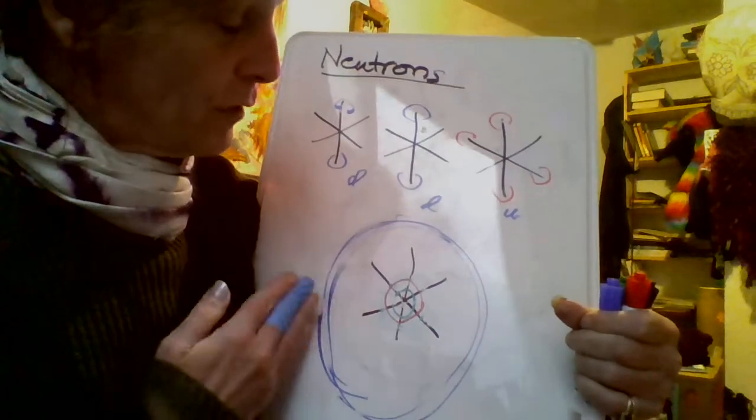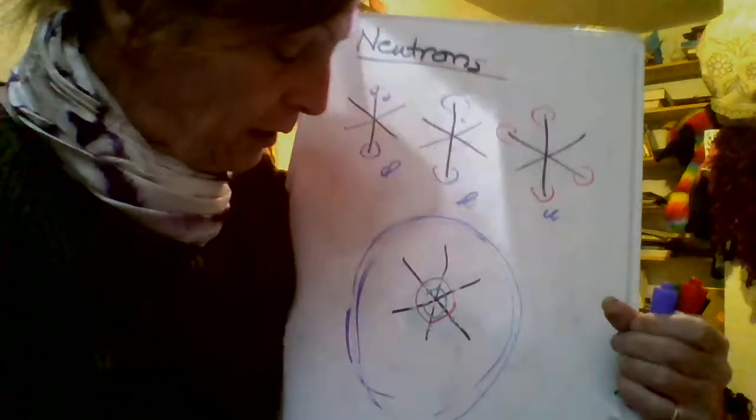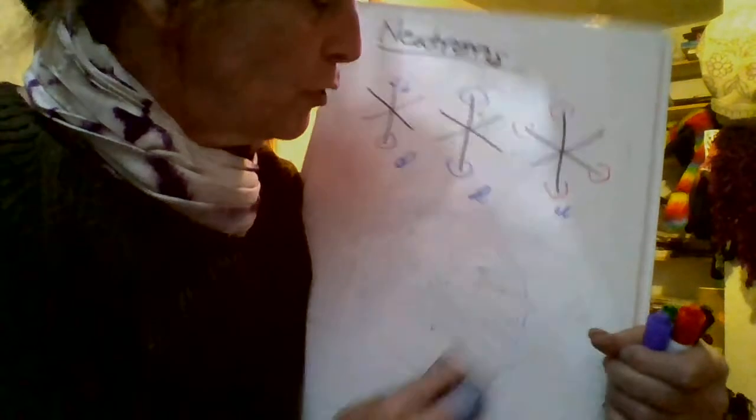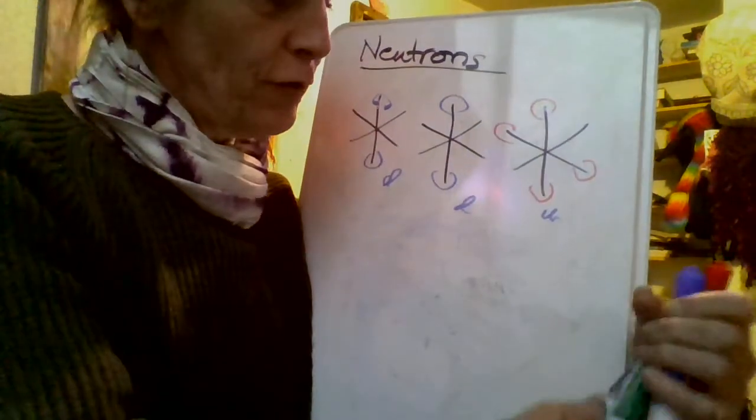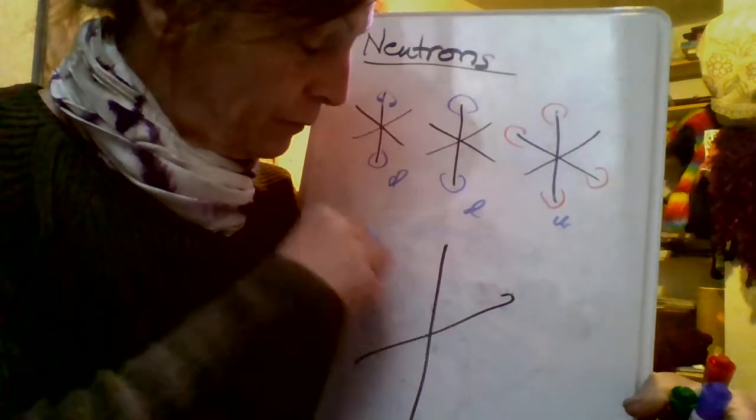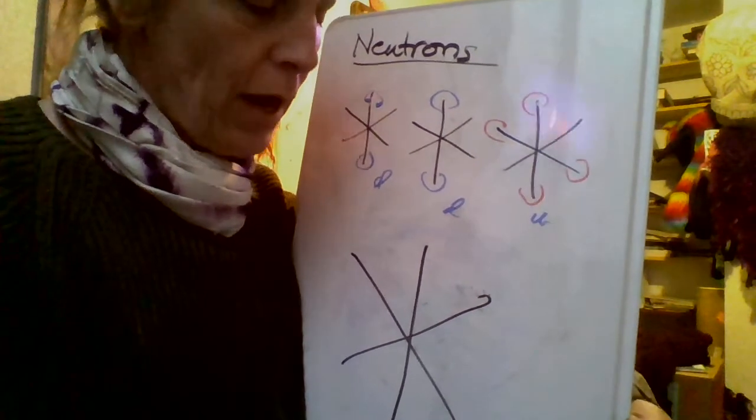The neutron has everything contained in it. The neutron is like a little double universe. The proton is like a universe - well not the proton, the hydrogen atom.